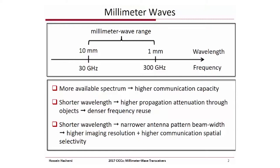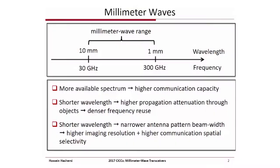On the other hand, in millimeter waves, the wavelength of the electromagnetic wave is shorter compared with radio frequencies. This will have two profound effects. Number one, there will be more propagation attenuation through objects, which means that if you are communicating in millimeter waves in a given room, the adjacent room may not receive the signal. This can be an advantage in that you can reuse the frequency in multiple rooms without causing in-channel interference. On the other hand, shorter wavelength corresponds to narrower antenna beam width, which means you can have higher resolution in imaging and higher selectivity for wireless communications.